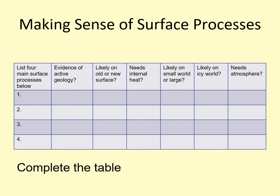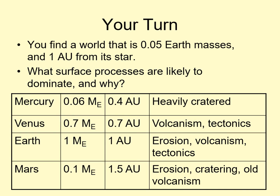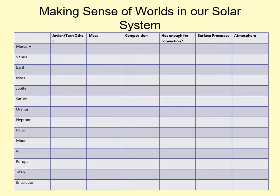Now that we've gone through the major surface processes, see if you can put together the key features of each of them in a table. Here's a world with a mass of 0.05 Earth masses and a distance of 1 AU from its star — what surface processes should be most important here? Make sure you explain why. We've included data for the planets in our solar system so that you have something to compare it to. We'd also like you to try filling in the surface processes column in the table we've seen before — you'll probably have to look up the specifics for some of these worlds in your textbook, or look ahead at the next few lectures.